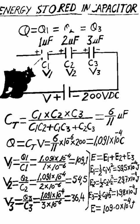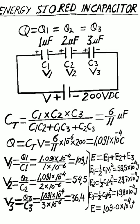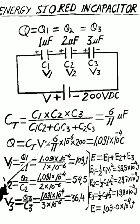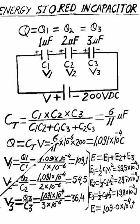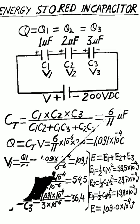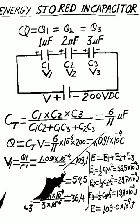The total capacitance CT of three series capacitors C1, C2, C3 equals C1 multiplied by C2 multiplied by C3, divided by (C1·C2 plus C1·C3 plus C2·C3). After substituting the values of all three capacitors into this formula, we get CT equal to 6/11 microfarad.